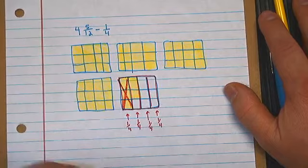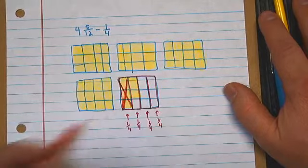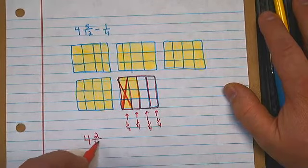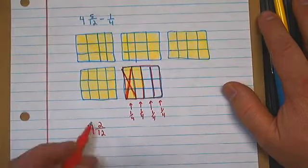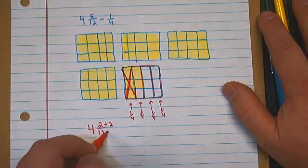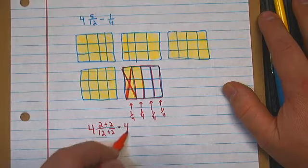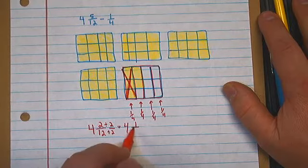which leaves me with one, two, three, four wholes, and two-twelfths, right? And I could simplify two-twelfths, divided by two, top and bottom, and that will get me four wholes and one-sixth.